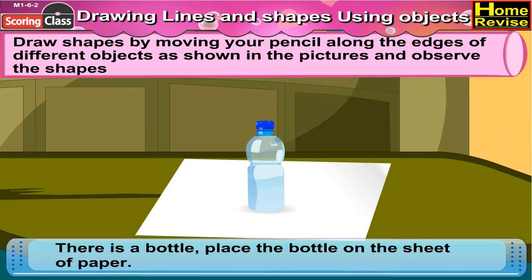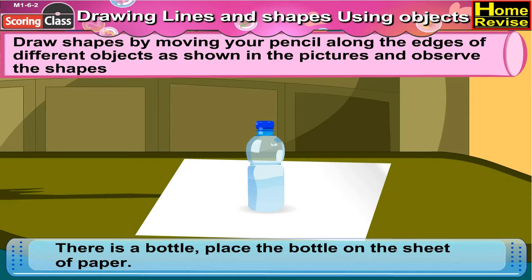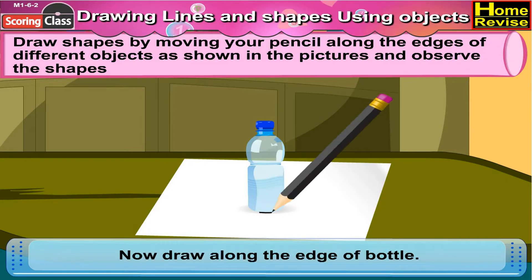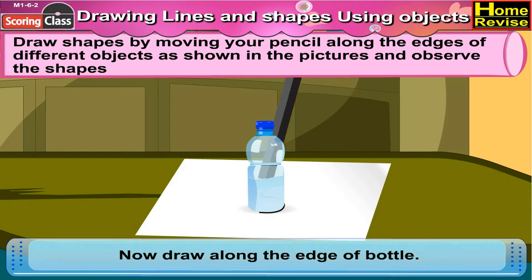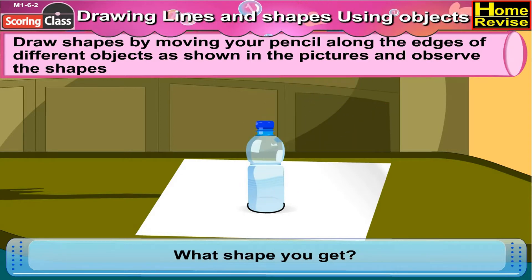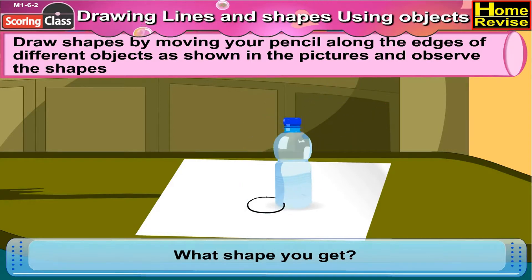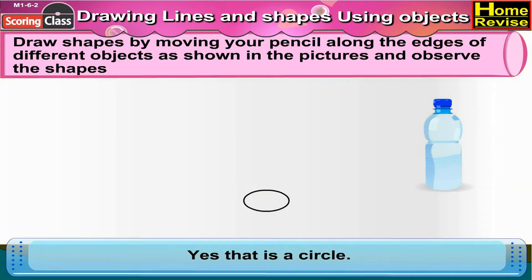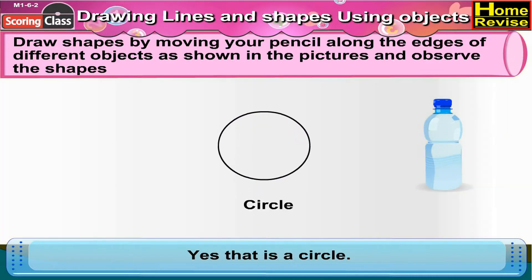Here is a bottle. Place the bottle on the sheet of paper. Now draw along the edge of the bottle. What shape do you get? Yes, that is a circle.